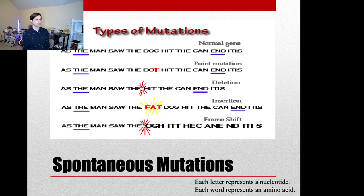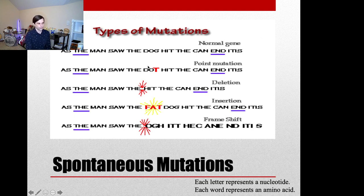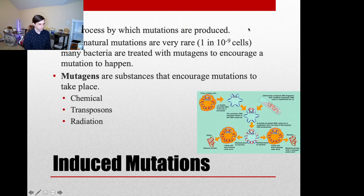There are lots of different types of mutations: point mutations, deletion mutations, insertions, and frame shifts. A point mutation is a single change in a nucleotide sequence; a deletion removes a nucleotide or amino acid; an insertion adds one; and a frame shift involves removing a single nucleotide, which causes the reading frame to shift. I'll link a video going through the different types of mutations in the description as well.